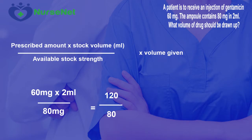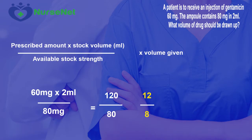To make our calculation more manageable, we can look to simplify this fraction of 120 divided by 80. We can look for a common factor — a number that fits into both 80 and 120. In this instance, it's 10. So 120 divided by 10 gives us 12, and 80 divided by 10 gives us 8, creating a more manageable division: 12 over 8. 12 divided by 8 gives us our answer of 1.5 ml.